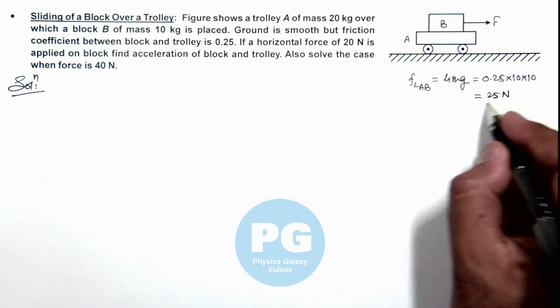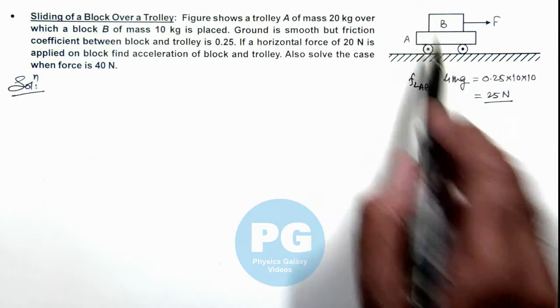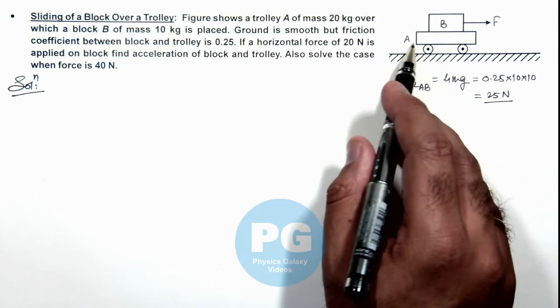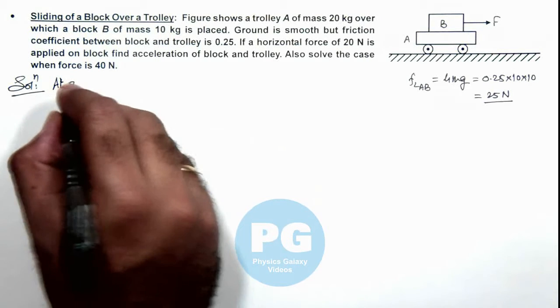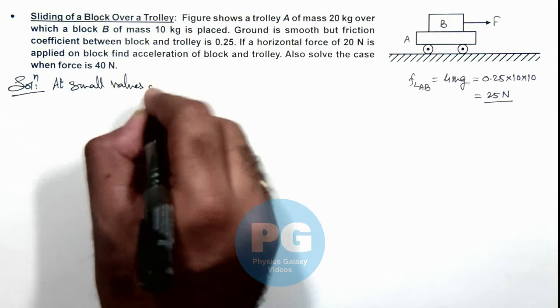That is limiting friction between block and trolley. So when the friction will approach to the value of 25 newton then block B will start sliding with respect to trolley. So here we can say at small values of F...